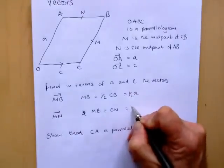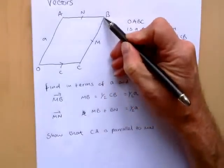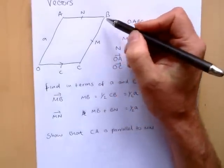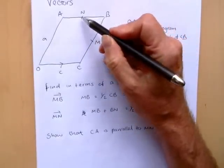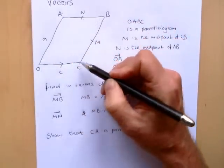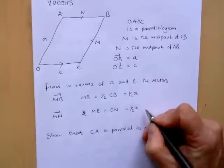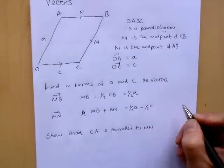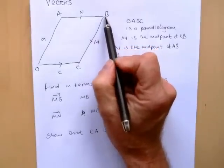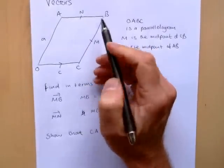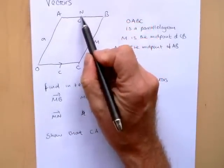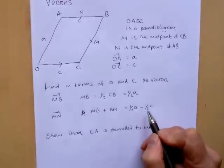So that would be half a, which we've already just worked out. From there to there is half a. And then the B to N is going against the c and it's going to be half of the c. And that's because the A to B is also the same as vector c. But we're going against it in the direction and we're only going half the distance, so half c.